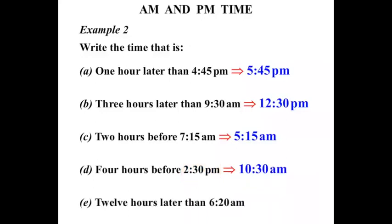Final one: 12 hours later than 6:20 AM. Well 6:20 AM, when we're dealing with 12 hours later or even 12 hours earlier, we add 12 hours to 6:20 and we would still be at 6:20. All we would do is change the AM to PM.